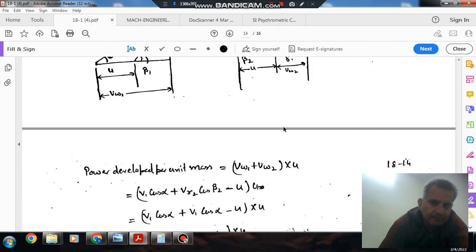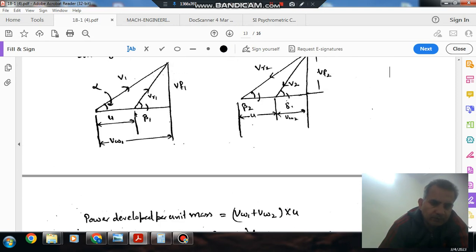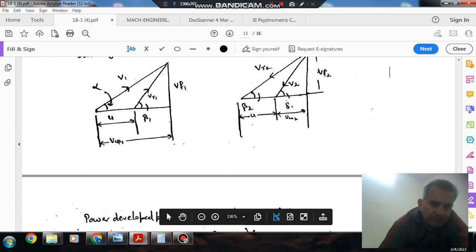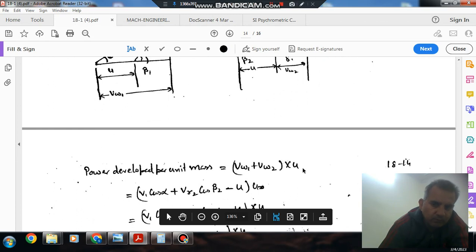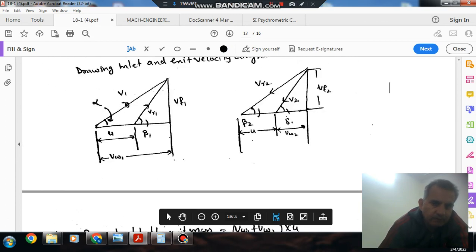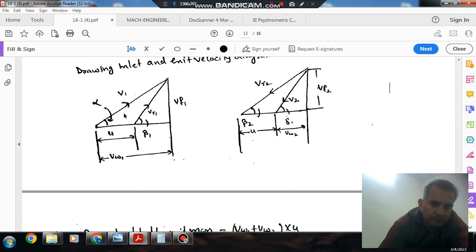Now, power developed per unit mass: if mass is one unit, then power equals Vw1 plus Vw2 times U. Vw1 equals V1 cos alpha, and Vw2 equals Vr2 cos beta2 minus U, because Vr2 cos beta2 is this quantity, and if we subtract U from it, we get Vw2.